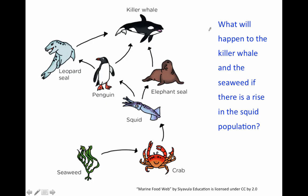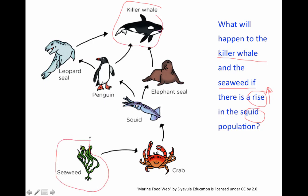If we're talking about what would happen to the killer whale and the seaweed if there is a rise — and I know rise means to increase — in the squid population. So we're just looking at the killer whale and the seaweed, those are our two organisms that we're focusing on, if there is a rise or increase in the squid population. So the squid are going to end up increasing. Push pause at this time.